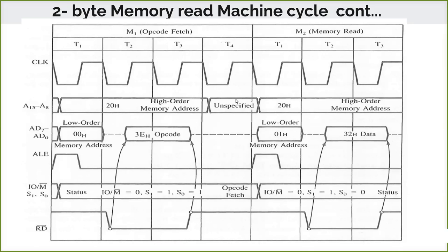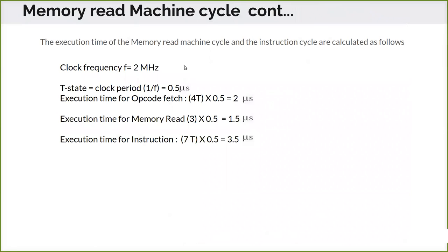To calculate the execution time, say the clock frequency is given as 2 MHz for this 8085. The T-state duration is calculated as 1/F, so 1/2 MHz gives 0.5 microseconds per T-state. For the opcode fetch of 4 T-states: 4 × 0.5 = 2 microseconds. For the memory read of 3 T-states: 3 × 0.5 = 1.5 microseconds. Adding these gives 3.5 microseconds total, or directly 7 T-states × 0.5 microseconds = 3.5 microseconds. This is how you calculate the total execution time for a particular instruction, and likewise you calculate for a full program to find total execution time.